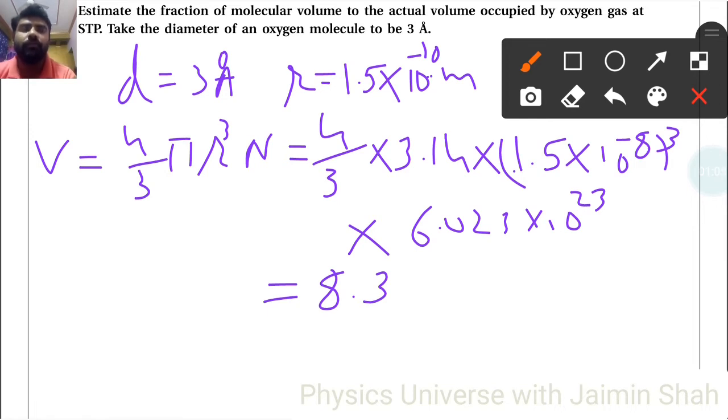to the actual volume occupied by oxygen gas at STP, that ratio is 8.3/22400. So 8.3 divided by 22400 equals 3.705 × 10^-4. This is the fraction of molecular volume to the actual volume occupied by oxygen gas at STP.